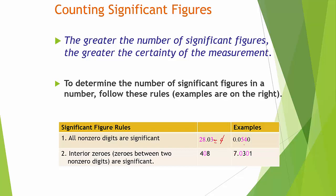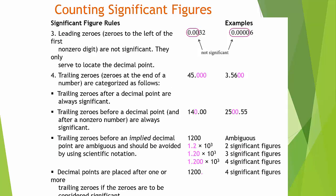Looking at trailing zeros — shown in purple — one number has five significant figures, another also has five. Remember: zeros after a number with a decimal always get to count. One example has five total significant figures, another has all six counting. For scientific notation, you only look at the coefficient for significant figures — trailing zeros in the coefficient count, giving four significant figures.